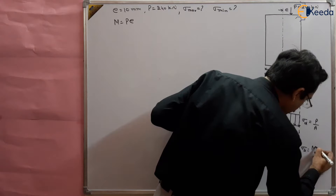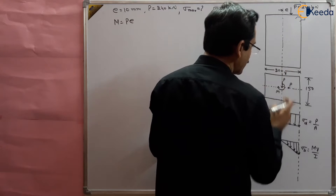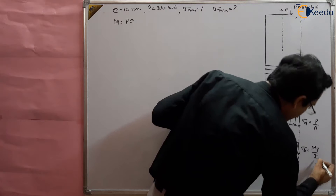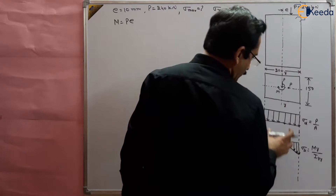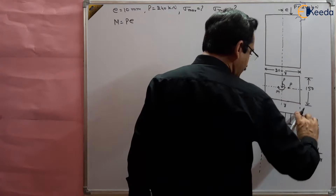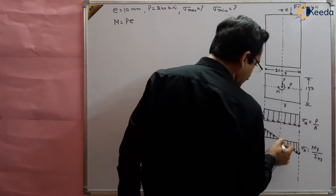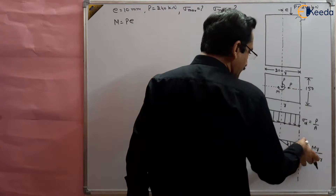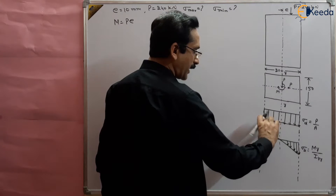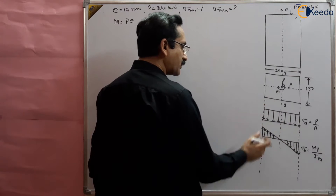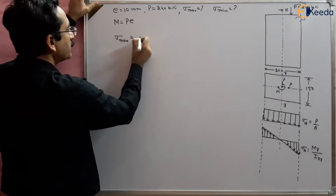The bending stresses are compressive on one portion and tensile on the other. Bending stress is given by M·Y / I, where I is the second moment of area about the YY axis, since bending occurs about that axis. On the right side of the axis, stresses add up giving maximum stress; on the left side they reduce, giving minimum stress.